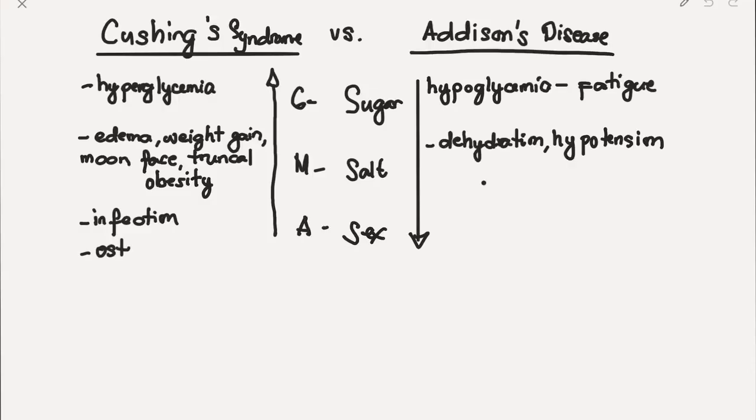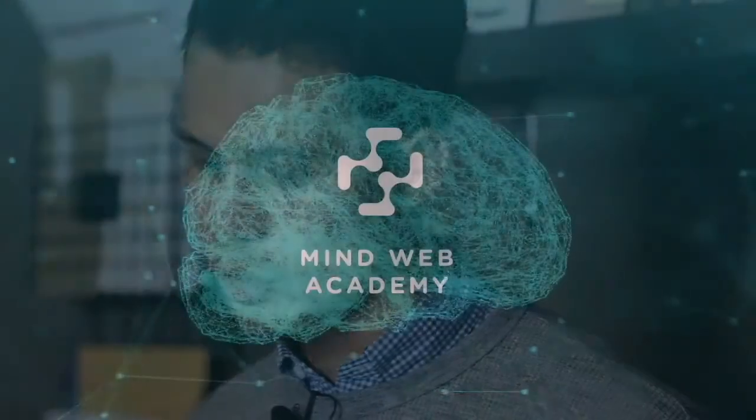Where should we place osteoporosis? Steroidal hormones also cause demineralization of bone. So with long-term elevated steroidal hormones, there is osteoporosis. Osteoporosis is common in Cushing's disease because the increased steroidal hormones lead to demineralization of your bone.